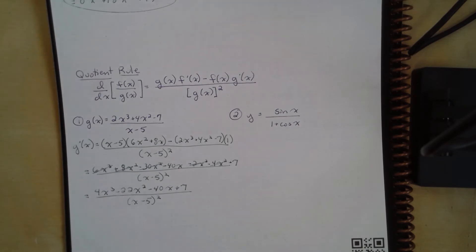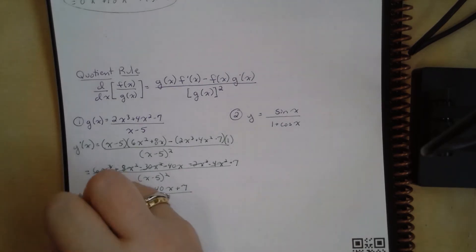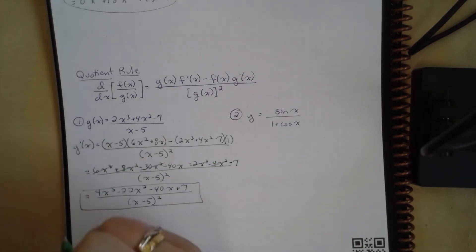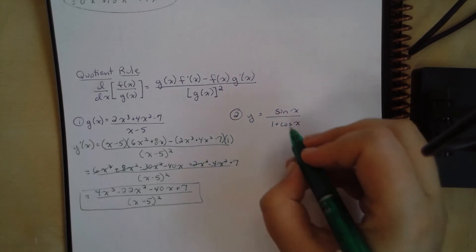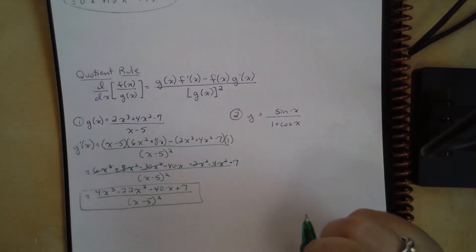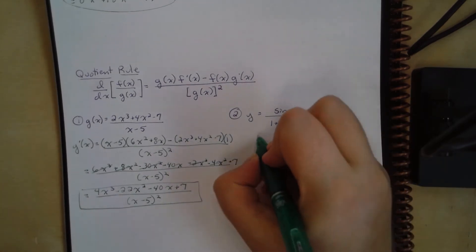I would just leave that — don't simplify it anymore. That's perfect just as it is. Our second example: y equals sine x over 1 plus cosine x.